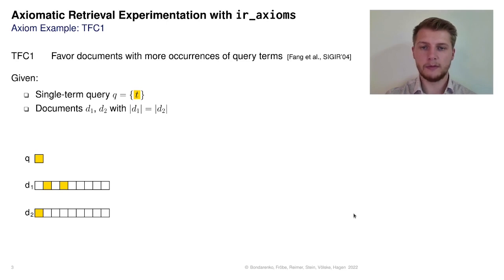considers term frequency counts and suggests to favor documents that contain more query terms. The axiom is originally formulated as follows. For simplicity, we have a query that consists of one single term and a pair of documents with the same length. If document 1 contains more query terms than document 2, it should be placed higher in the ranking.